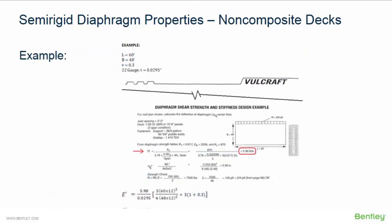For our particular model we ran through these calculations. We determined the size of the structure and the average loading, and calculated E-prime to be 1,190 ksi, which is what we entered into the properties table in the RAM Modeler. If you'd like more detailed information on this type of calculation, we also have some information available in an article on Bentley Communities.